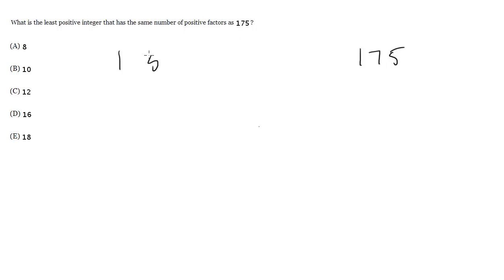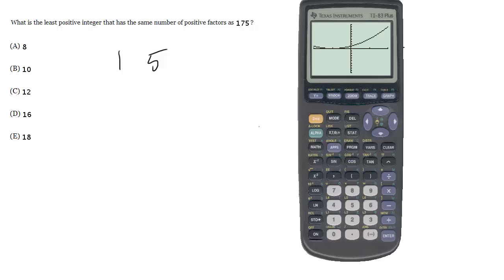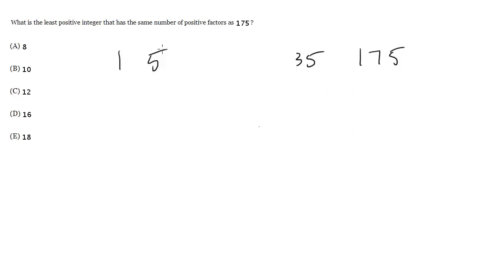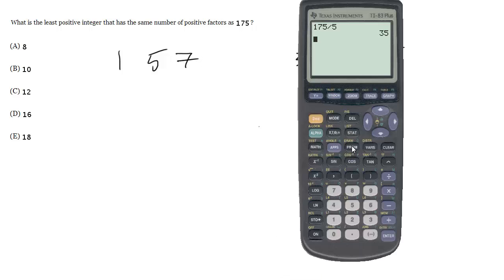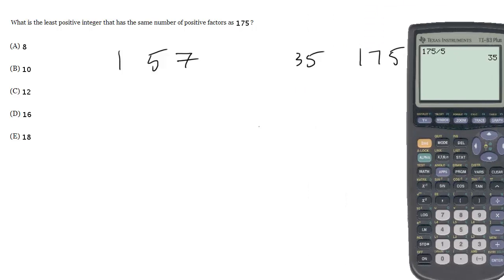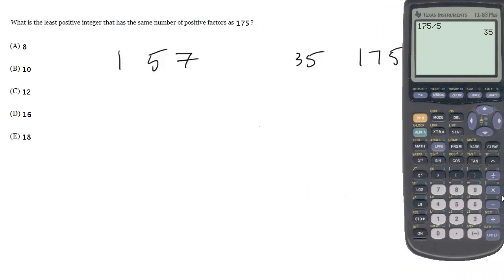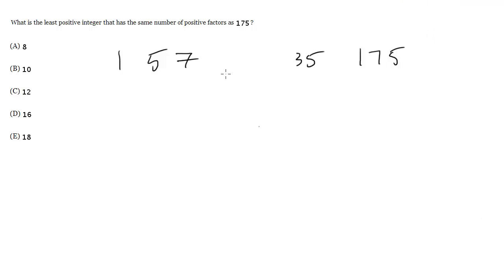5 will work though, so 5 goes into 175 how many times? 35. Which means if it goes in 35 times, this must also be divisible by 7. So we can go ahead and see how often 7 goes into 175. 175 divided by 7 gives us 25.